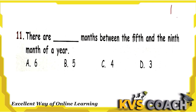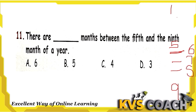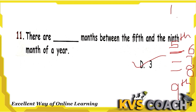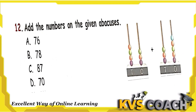Question 11: there are how many months between the 5th and the 9th month of a year? The 5th month is here, the 9th month is here. In between there will be the 6th, 7th, and 8th months. So between the 5th and 9th month, there are 3 months. Option D is the right answer.